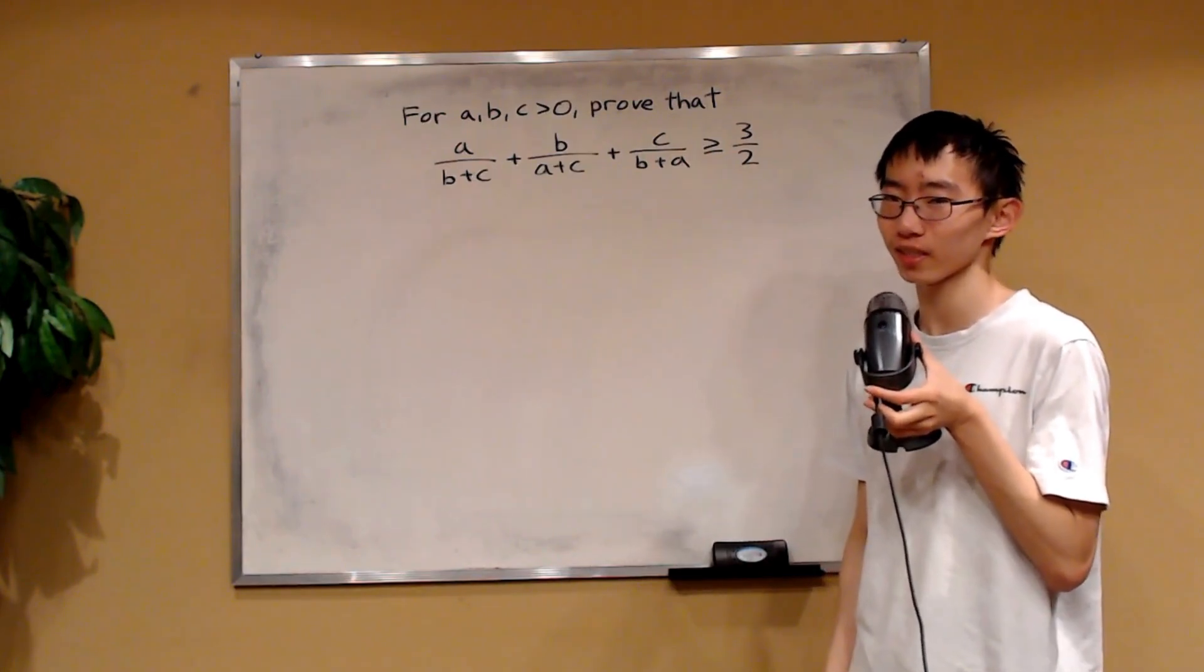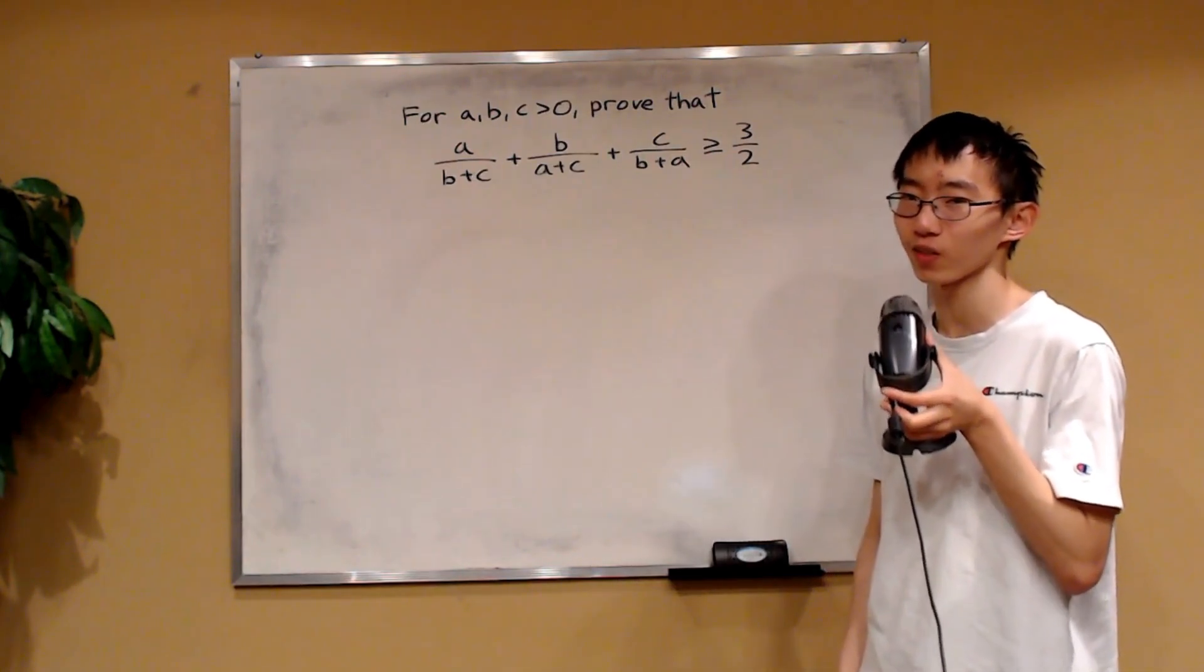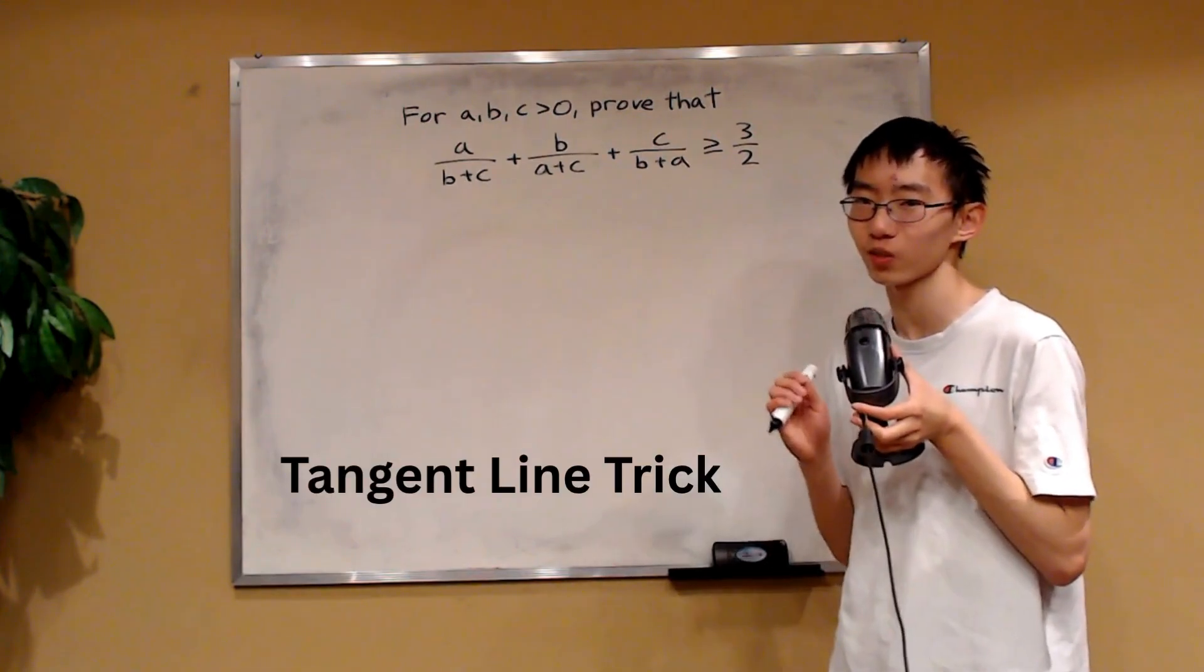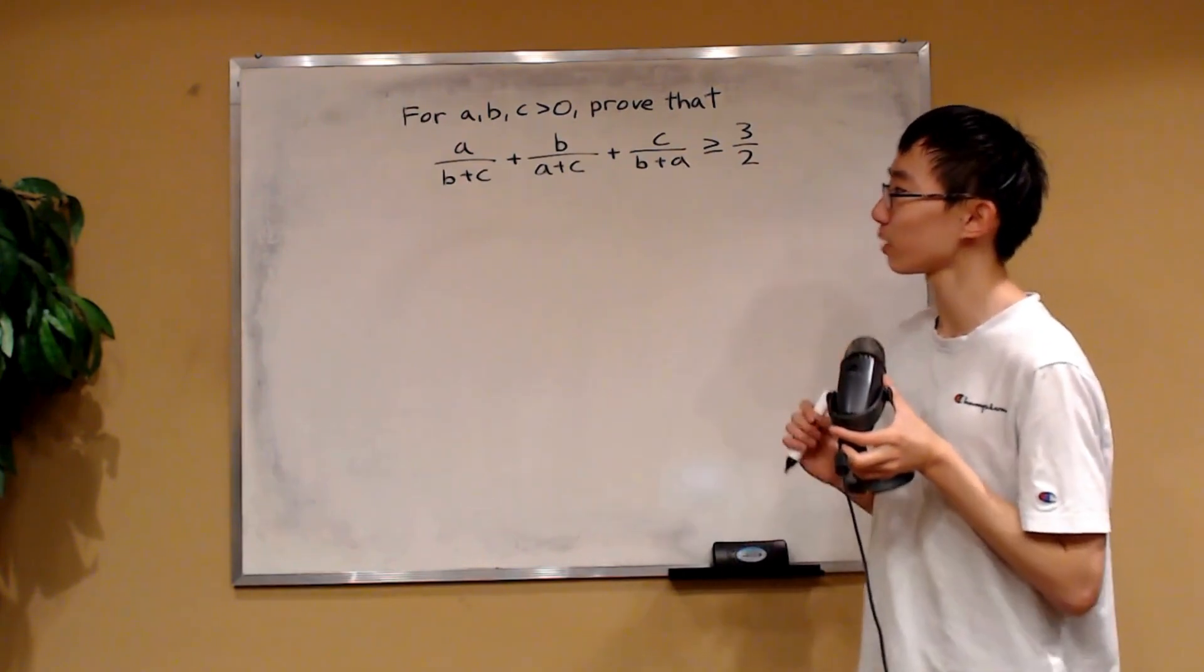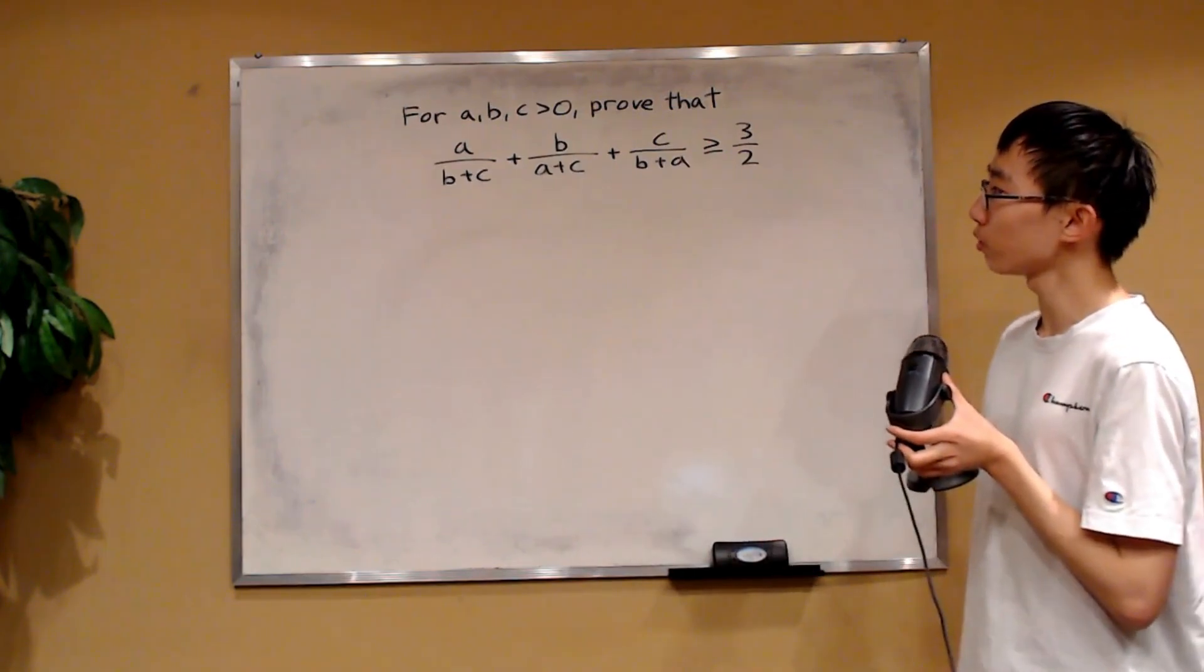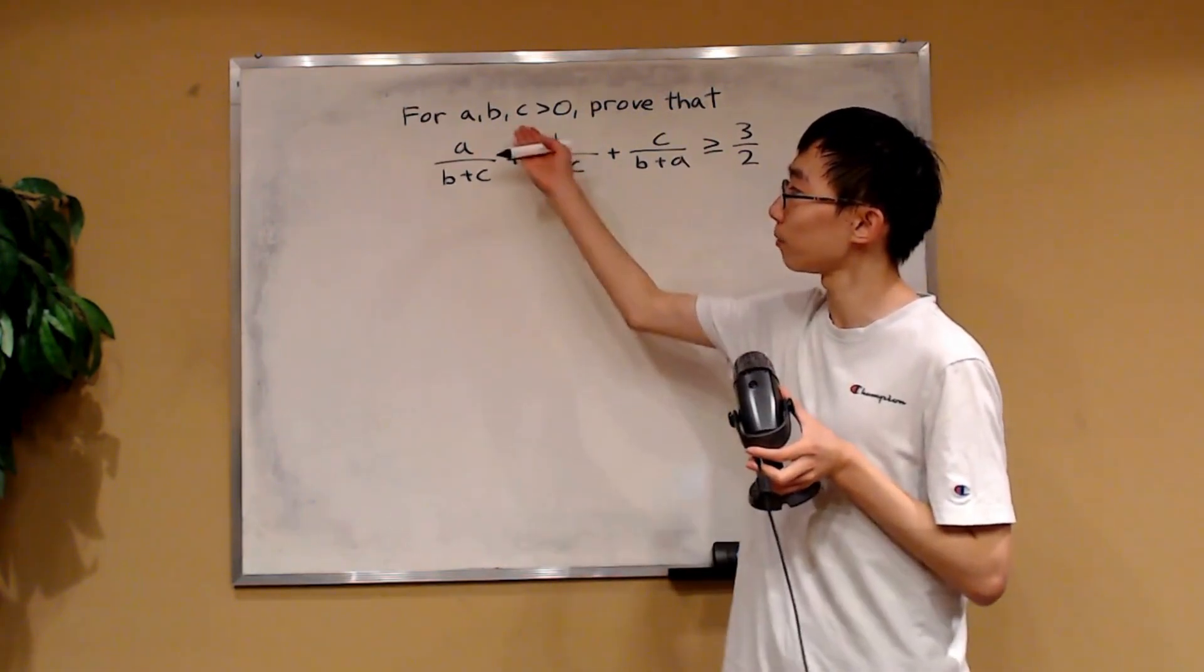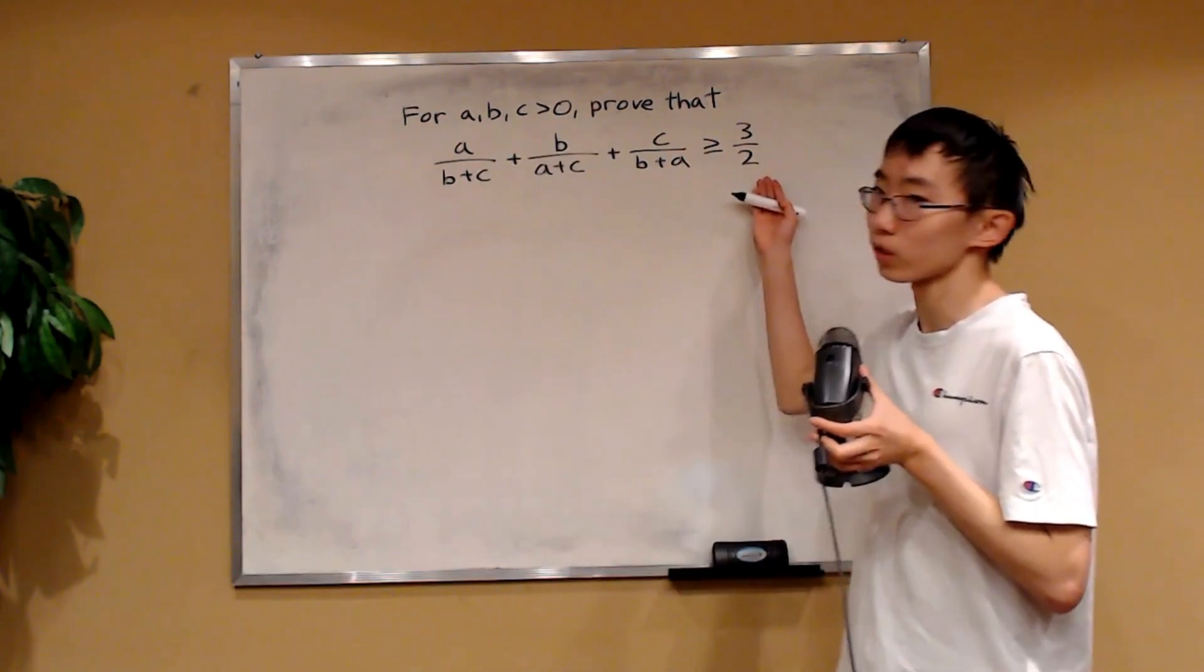In this video, I want to show you a technique to solve Olympiad inequalities. It's called the tangent line trick. It's super powerful and super elegant, and I'm going to demonstrate it with this example. We want to prove that for positive reals A, B, and C, this inequality holds.